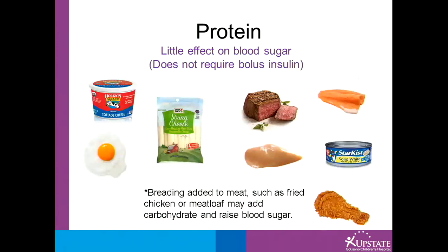Protein foods have little effect on blood sugar and do not require bolus insulin. Examples of these are cottage cheese, eggs, string cheese, meats such as beef and chicken, and seafood such as salmon and tuna fish. Breading added to meats such as fried chicken or meatloaf may add carbohydrate and raise the blood sugar.